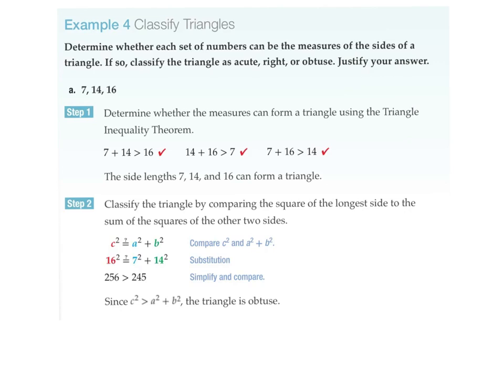So here's example four. Can we classify it as acute, a right, or an obtuse? Justify your answer. It's a triangle with sides 7, 14, and 16.